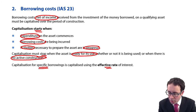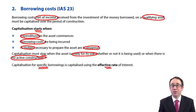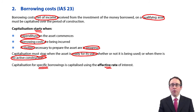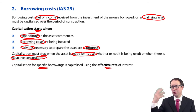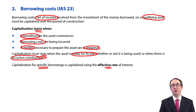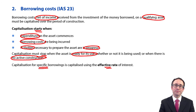It needs to be on a qualifying asset. A qualifying asset is effectively just an asset that takes a considerable period of time to construct. That's borrowing costs in a nutshell. There might be some additional aspects to consider when we get to SBR later in your ACCA journey, but for now, those are the rules. Once we know the rules, the key is the application. Let's look at the following videos and see how we get on with that application.